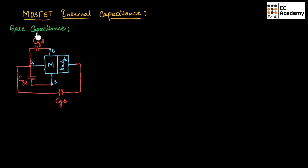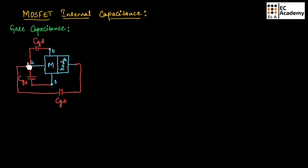First, let us understand gate capacitance. Gate capacitance is also known as built-in capacitances. If we consider the MOSFET, it consists of three terminals: gate, drain, and source. Along with this, MOSFET will have one more region which is known as body. Now, there will be junctions formed between gate and drain, gate and source, and also a junction formed between gate and body.